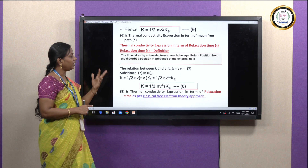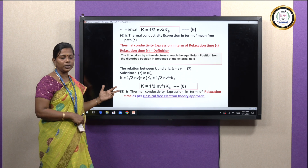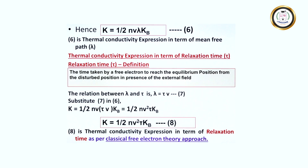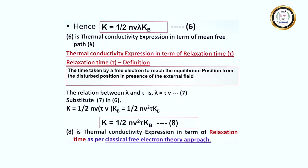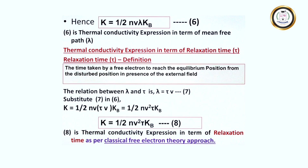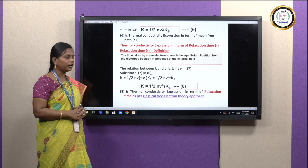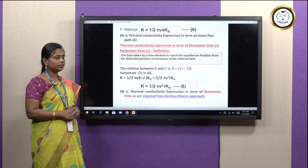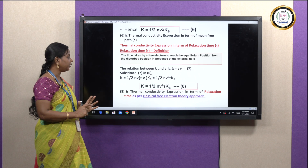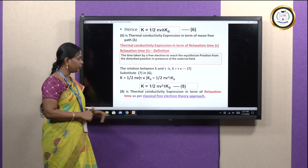Equations 6 and 8 both give the expression of thermal conductivity using the classical approach — equation 6 uses mean free path, equation 8 uses relaxation time. The final expression of thermal conductivity according to classical free electron theory is K equals (1/2)NV²K_B·tau.